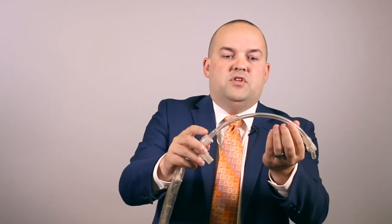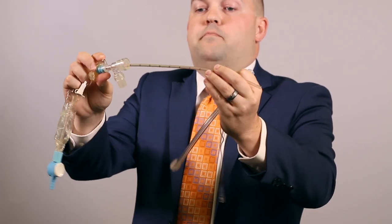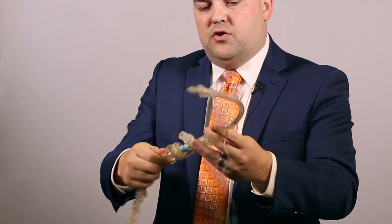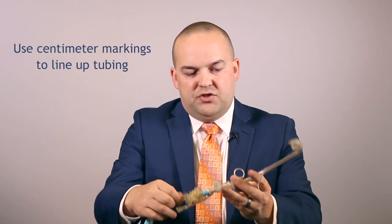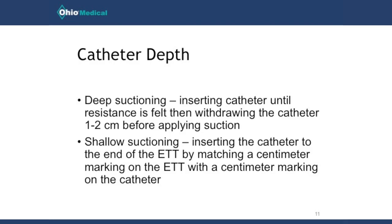The way to avoid that is: an endotracheal tube has centimeter markings on it, and a suction catheter has centimeter markings on it as well. What you want to do is line those up — they're simply measuring the length of the respective tubes. As you insert the catheter, twist it around to line the numbers up. For example, lining up the 25 with the 25 puts the catheter just at the end of the endotracheal tube. That way, when you apply suction and withdraw, you're ensuring you're not coming into contact with any tracheal tissue. The clinical practice guideline suggests using shallow suctioning rather than deep suctioning.